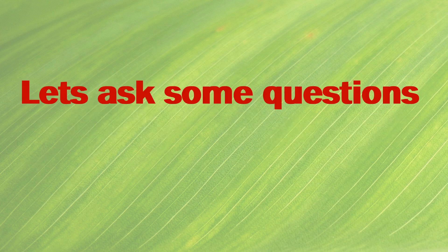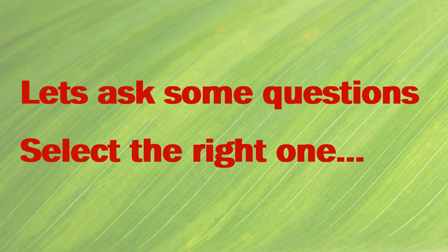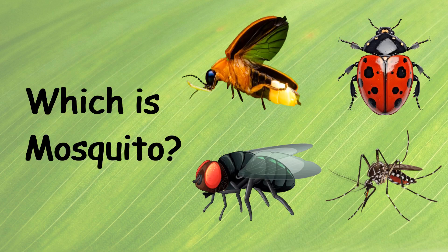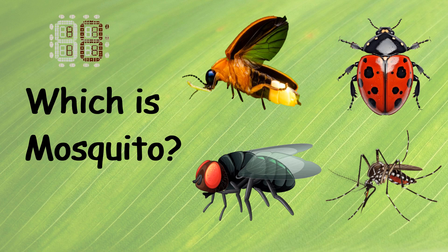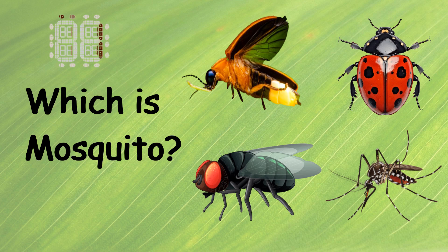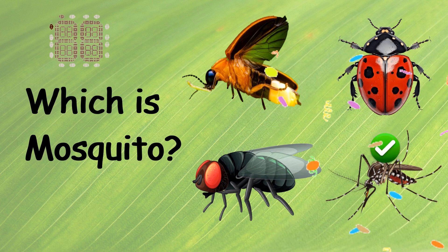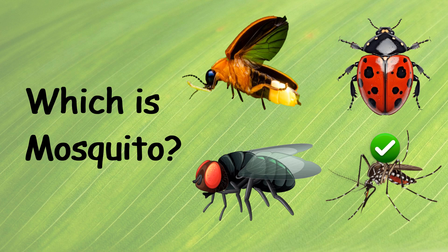Let's ask some questions. Select the right one. Which is Mosquito? Ten, nine, eight, seven, six, five, four, three, two, one, zero. This is the right one.